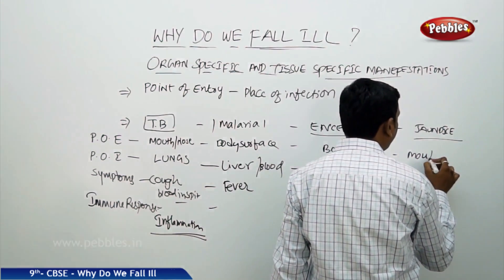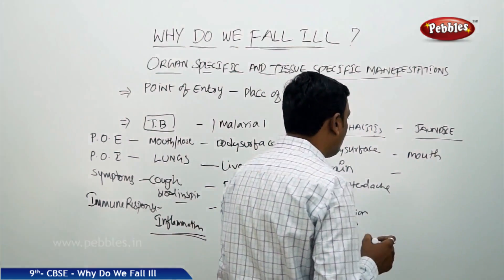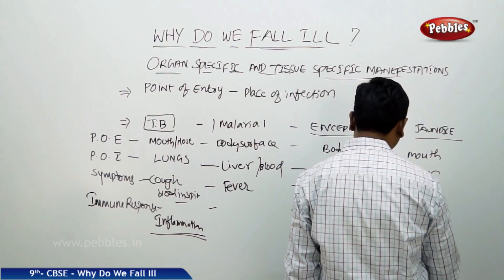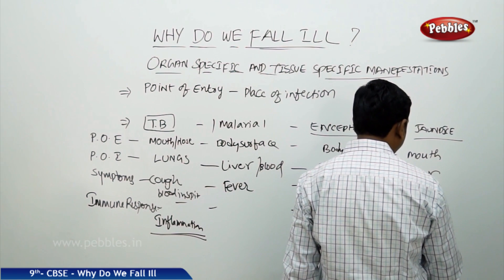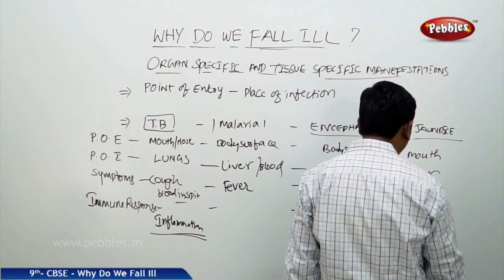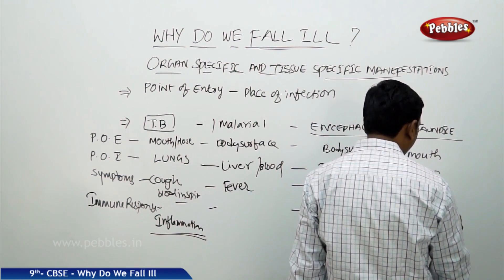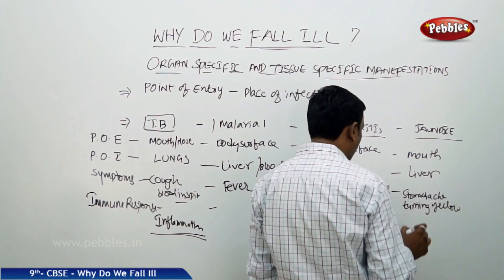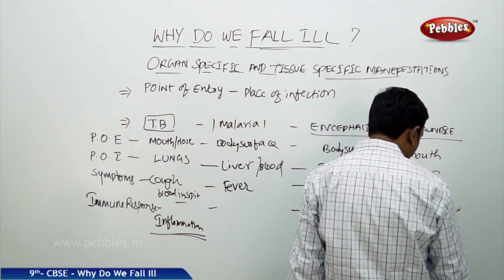Now, jaundice. It enters through the mouth via contaminated water or contaminated food. It affects the liver, and the symptoms are stomach ache and the body turning yellow — eyeballs and nails also turn yellow — along with inflammation of the liver.